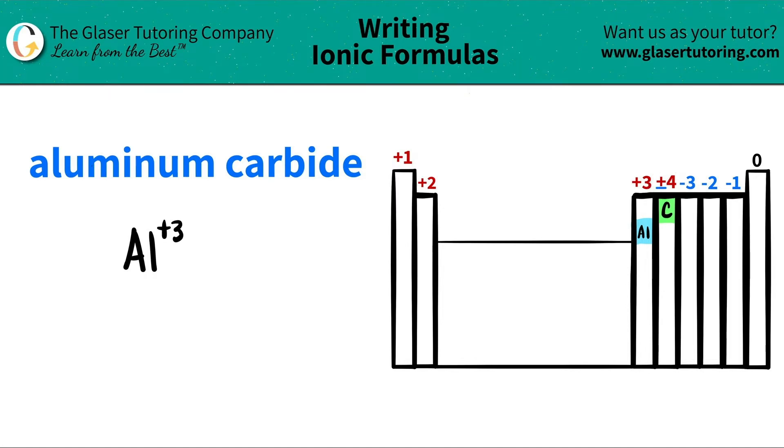But remember, ionic compounds, one has to be positive, and the other one that you choose has to be negative. So this carbon has to be the negative four form. Positive and negative.